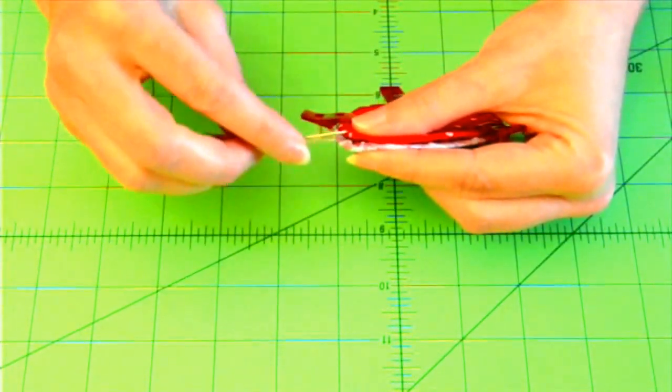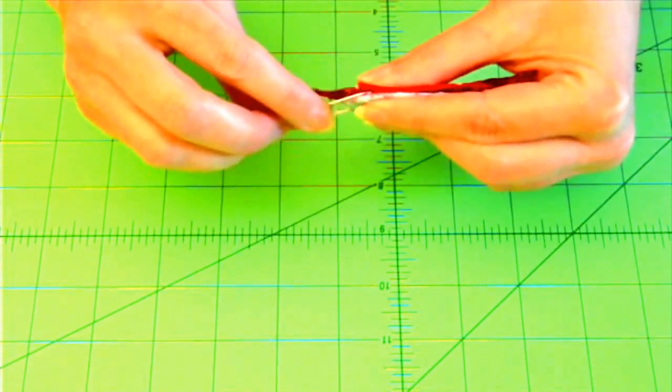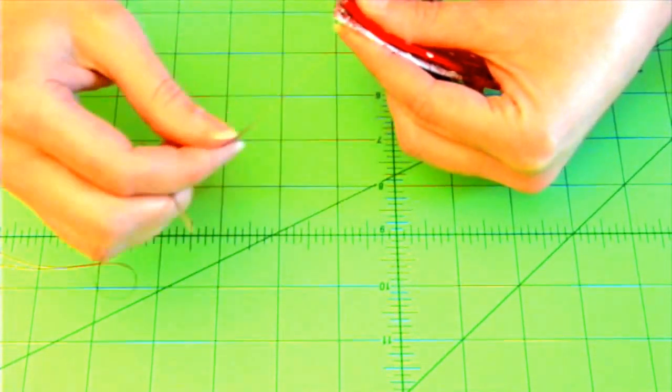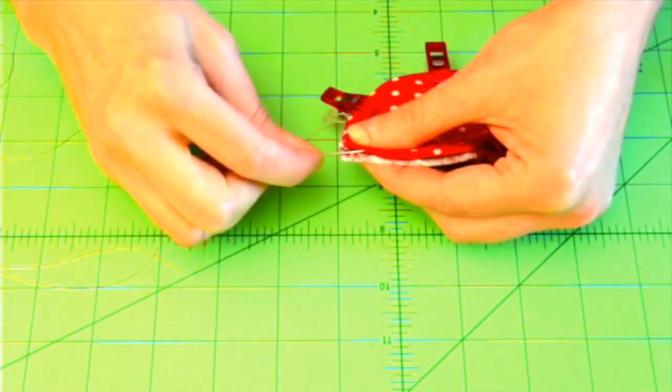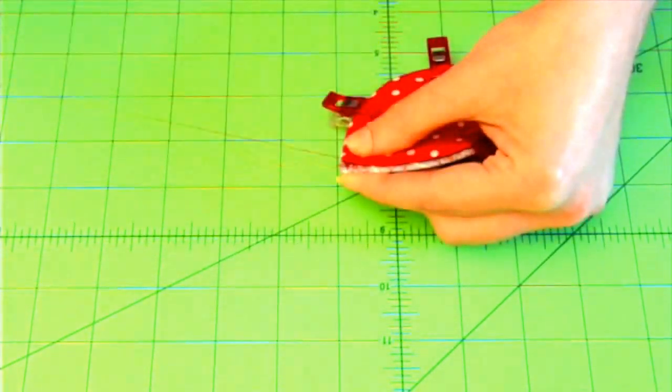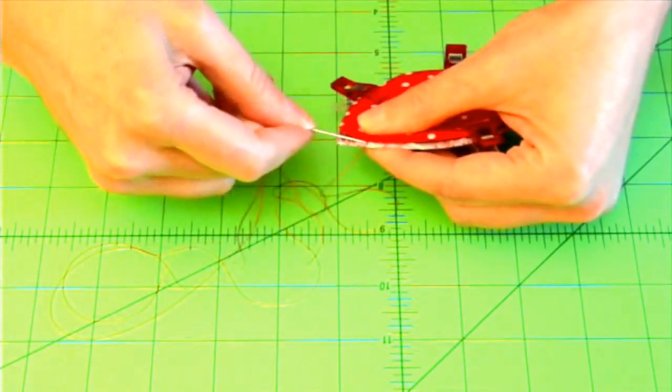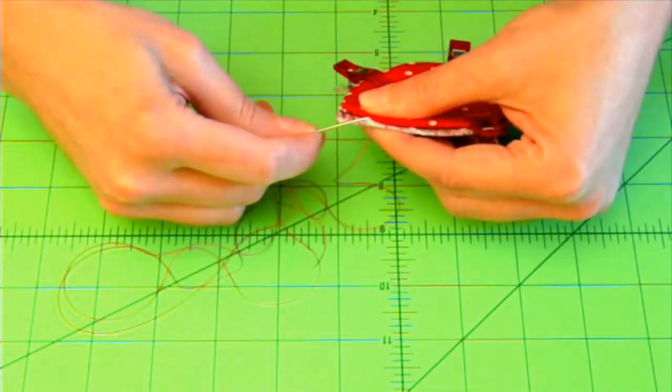We're going to use what's called a ladder stitch. I'll take my first stitch just into the bottom piece of fabric. That way my knot can get hidden between them. And then I'm simply going around the border, taking a little stitch into the top and a little stitch into the bottom and alternating those to bring the two pieces together.